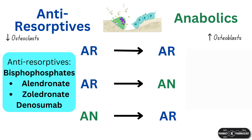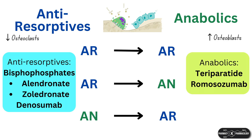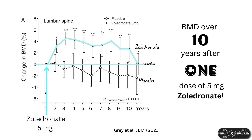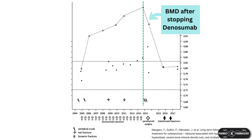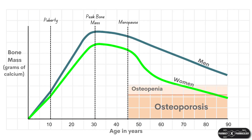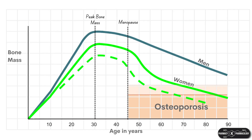For anti-resorptives, this video will cover alendronate, zoledronate, and denosumab, and for anabolics, teriparatide and romosozumab. The anti-resorptives can be divided into bisphosphonates and denosumab, which are distinctly different: bisphosphonate effects persist for months to years after stopping, whereas stopping denosumab causes rebound hyperresorption, which is more profound the longer the course. Bisphosphonates are first-line and effective for mild to moderate osteoporosis but may not be potent enough for severe osteoporosis.